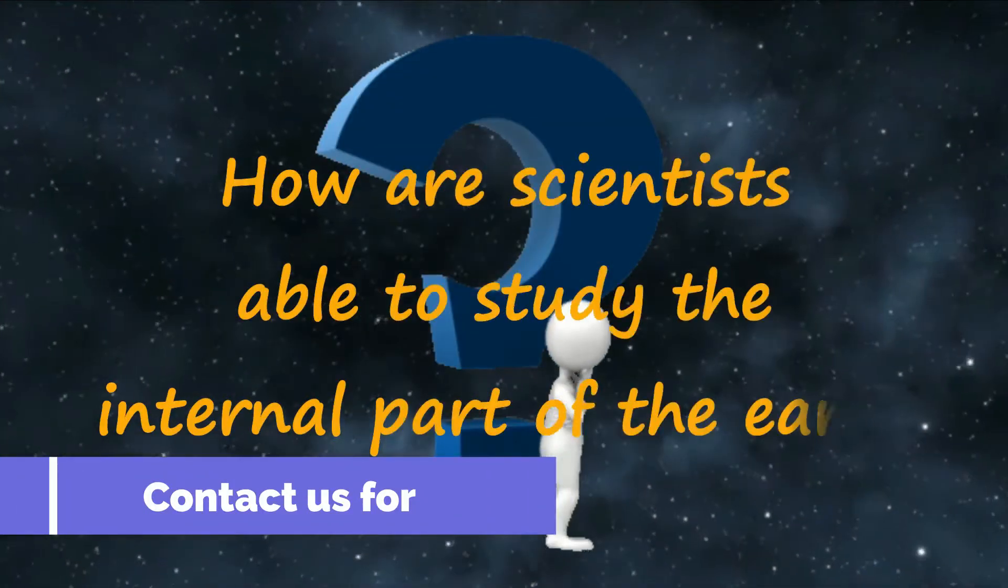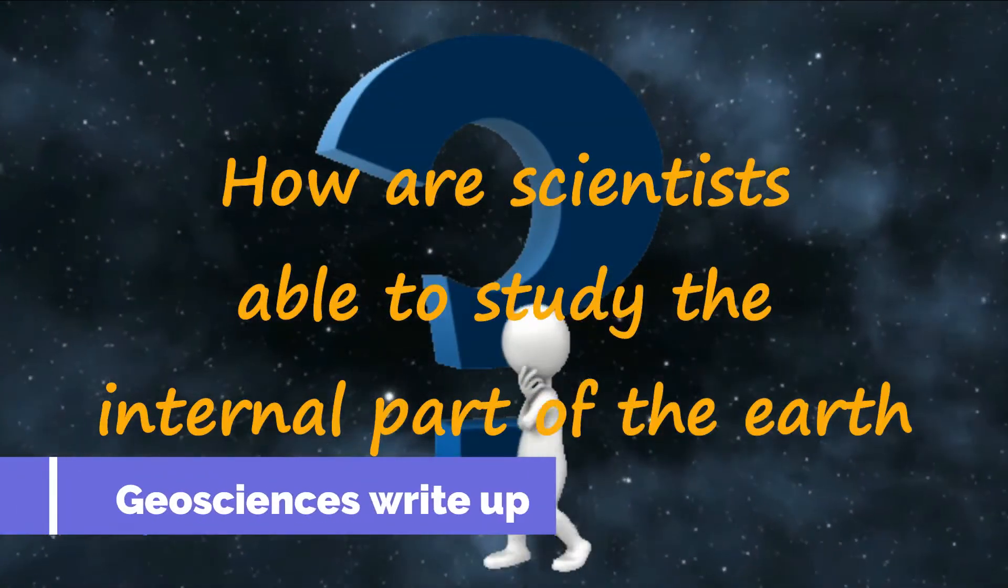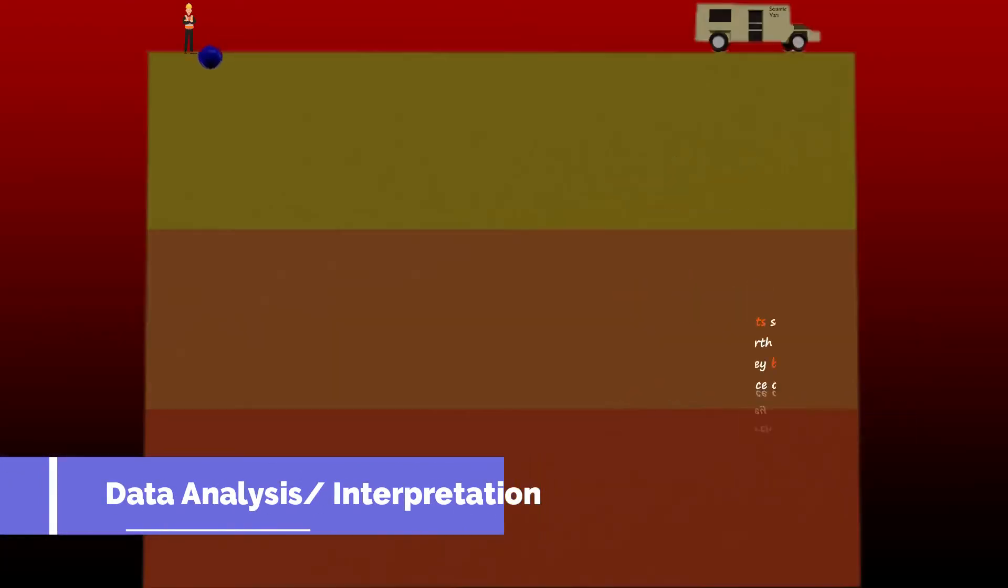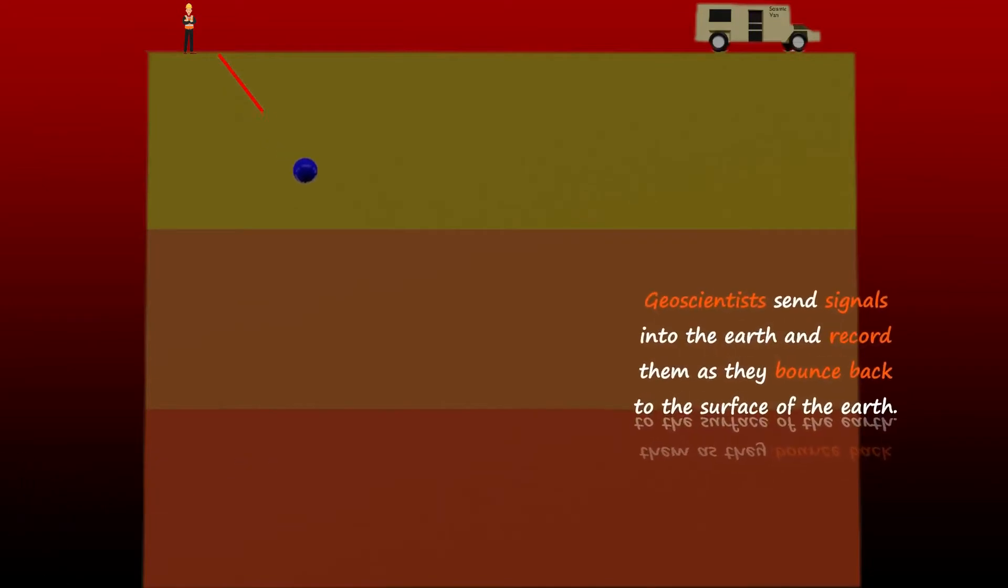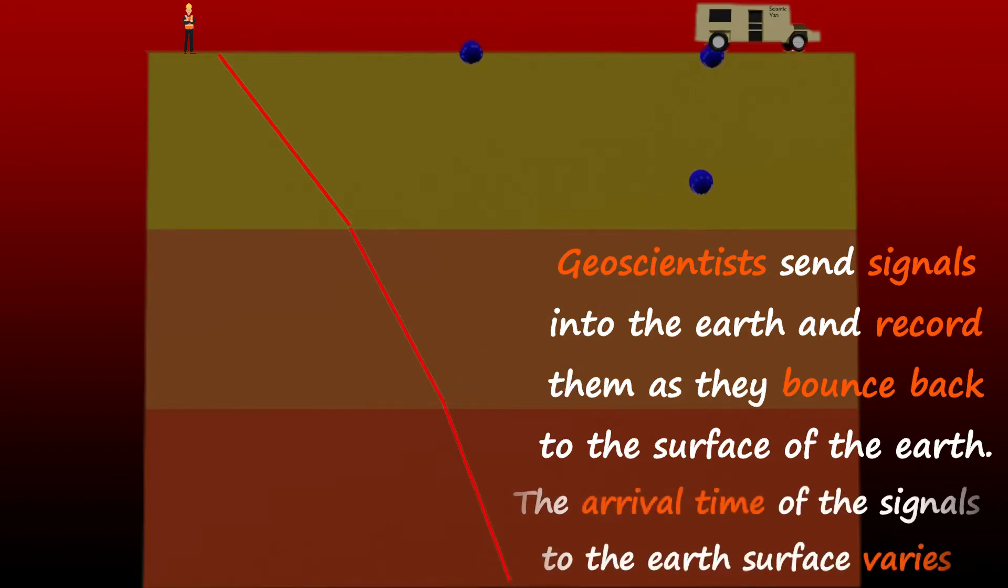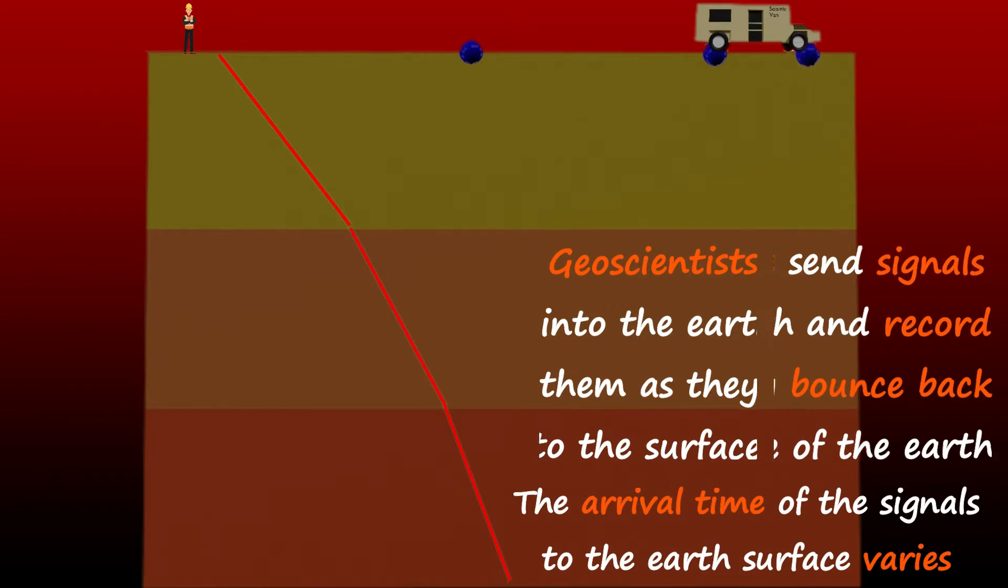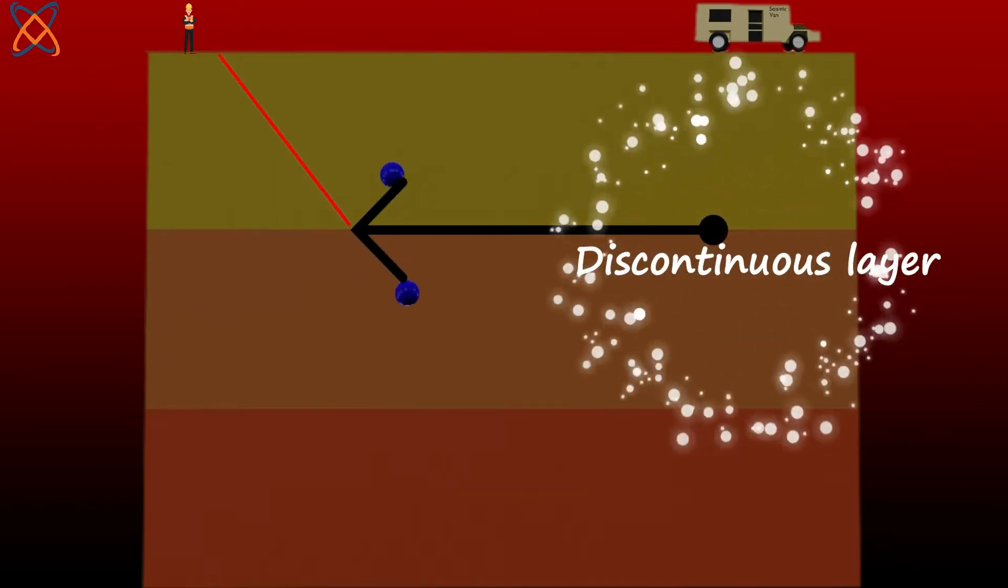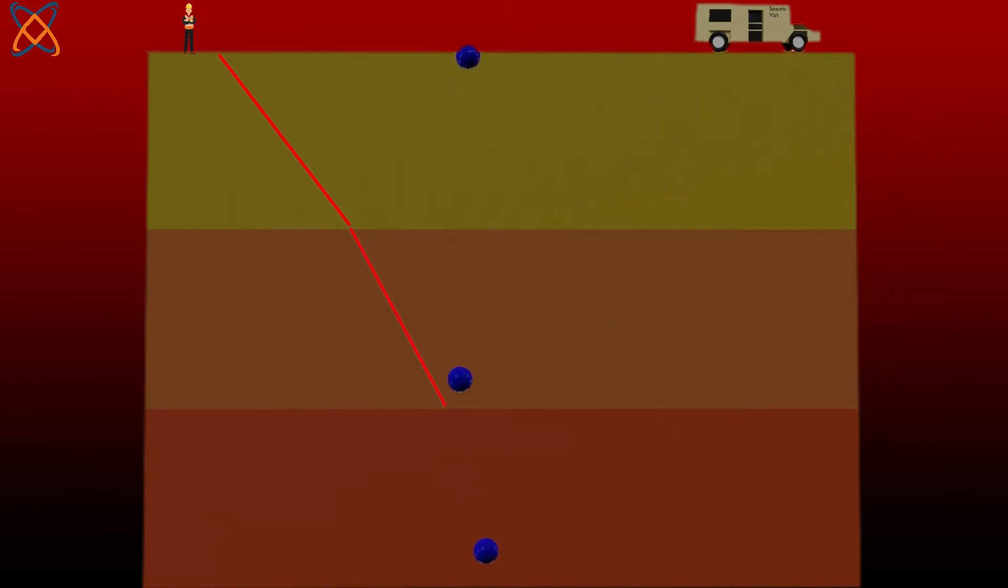By the way, how are scientists able to study the internal parts of the Earth? It's simple. They send signals into the Earth and record them as they bounce back to the surface of the Earth. Because the velocity at which they travel through different mediums varies, the arrival time at the Earth's surface also varies.